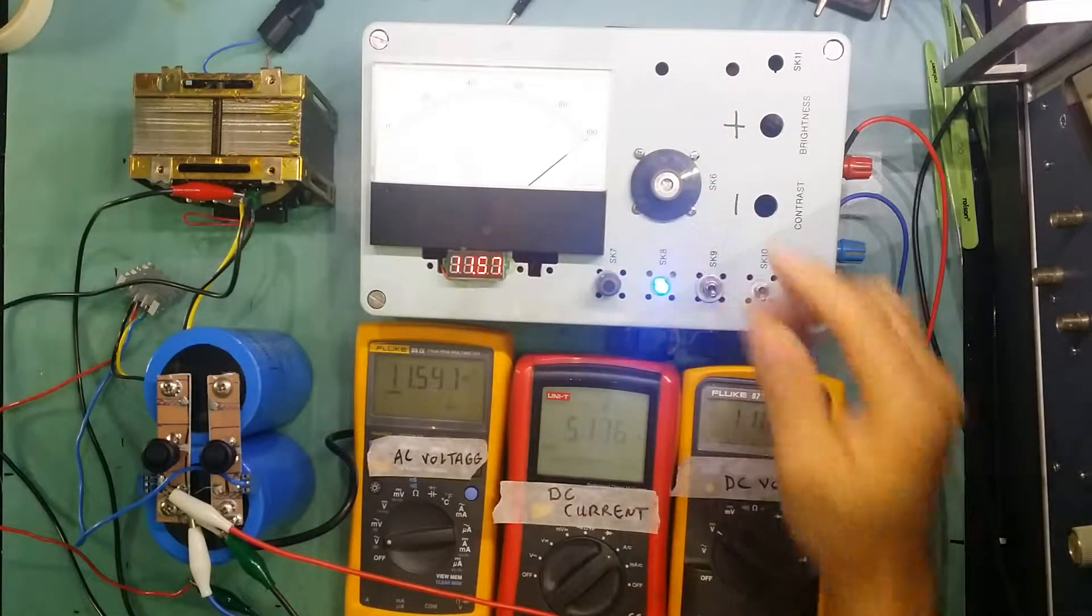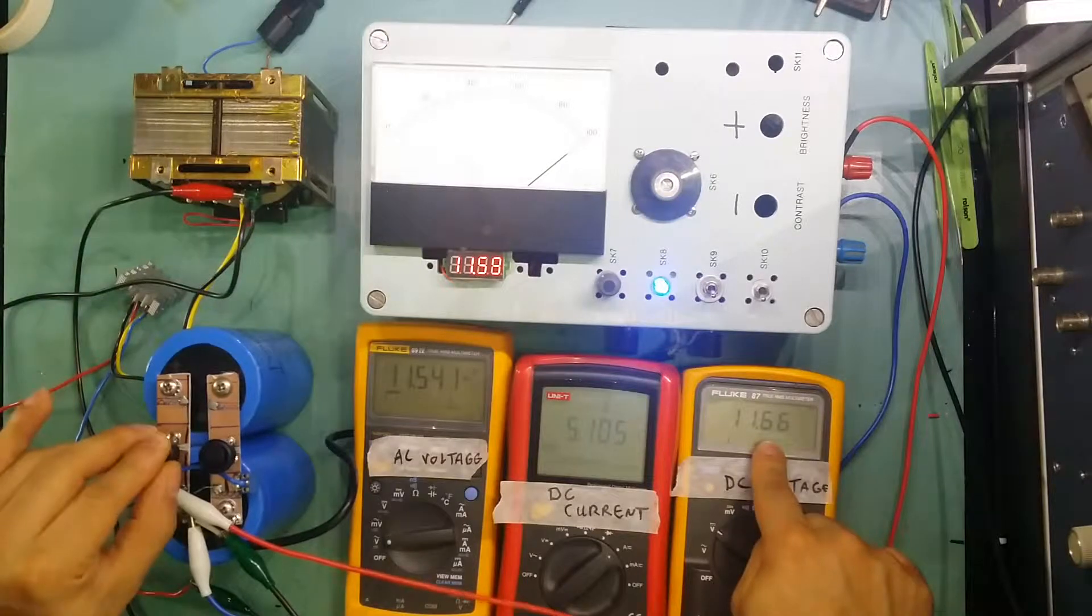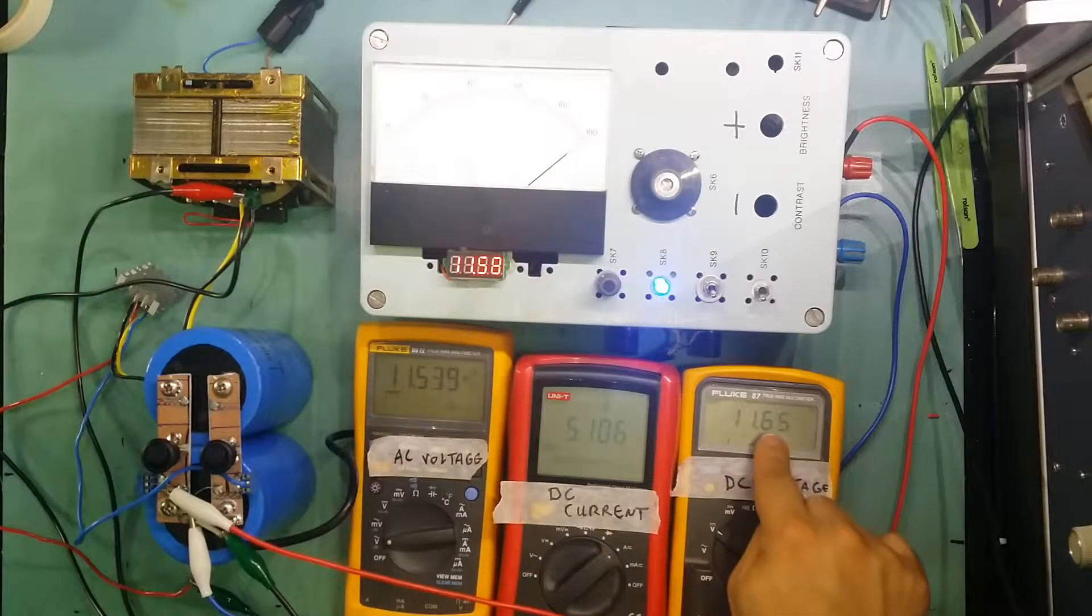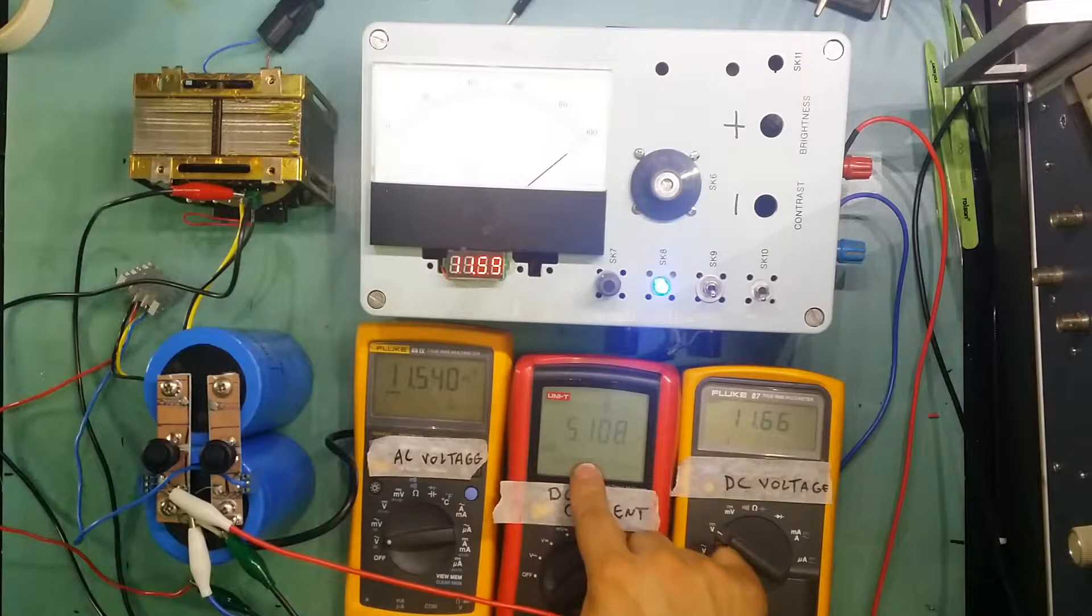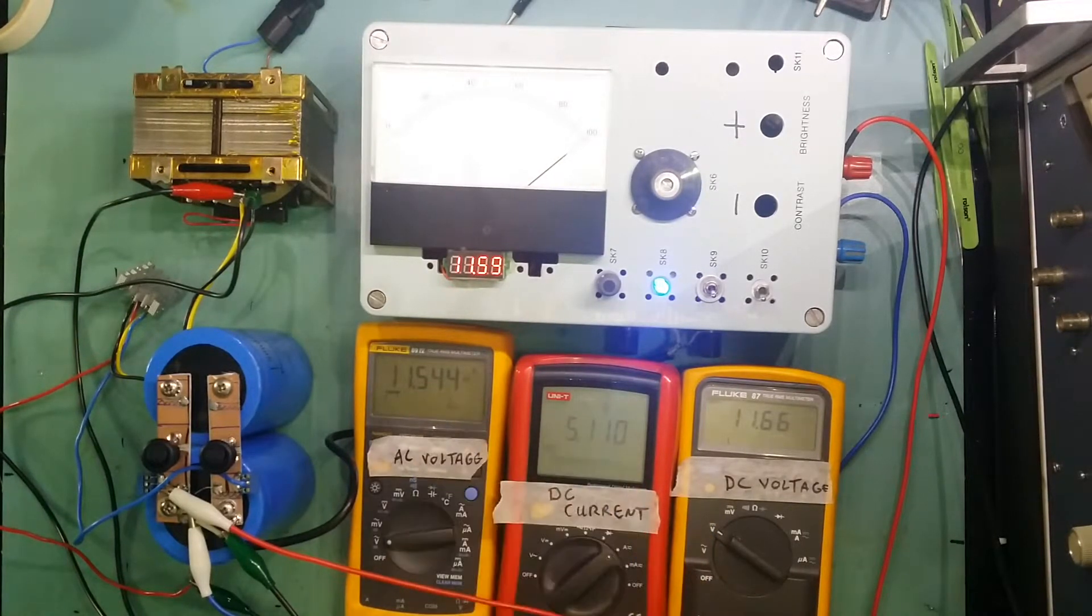And we go to 5 amp. 11.6, so that's almost 4 volts drop. We're pulling 5.1 amp, and the AC side is 700 millivolt drop.